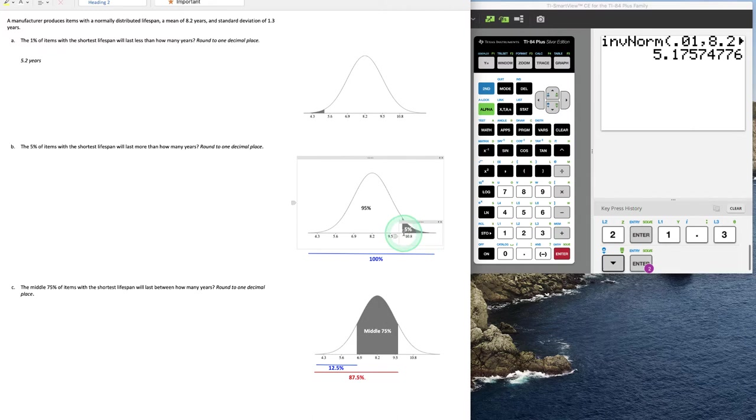This x value on the x-axis corresponds to either area to the left of 95% or area to the right of 5%. This will not affect the outcome of getting the x value, or in other words, the number of years for the lifespan in this problem.